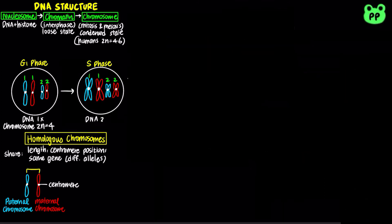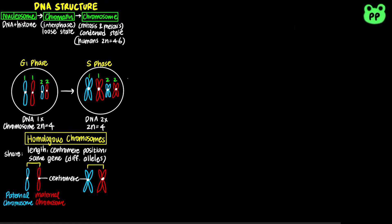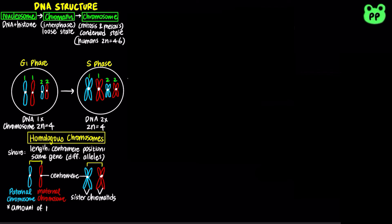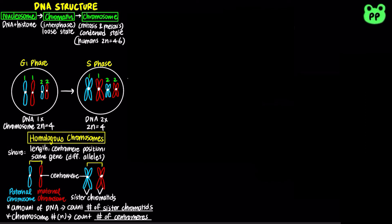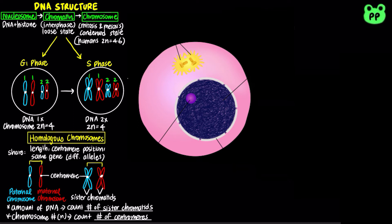During S phase, DNA replication takes place. Each chromosome now contains two identical sister chromatids attached through the centromere. Notice that although the amount of DNA doubles, the number of chromosomes still remains the same. A trick for distinguishing the two at each stage is to count the number of sister chromatids for the amount of DNA, and count the number of centromeres for the number of chromosomes. Note that I have drawn G1 and S phase in the condensed chromosome state for clarity, but the DNA actually exists as loose chromatin during these phases.